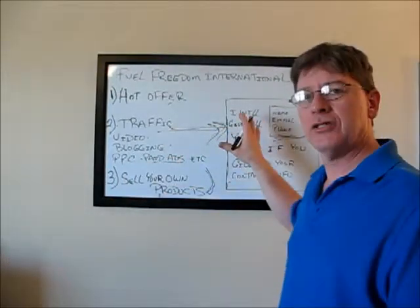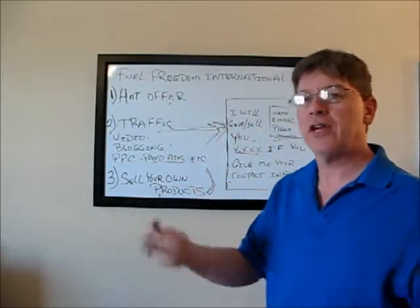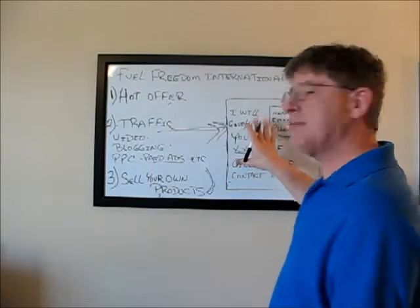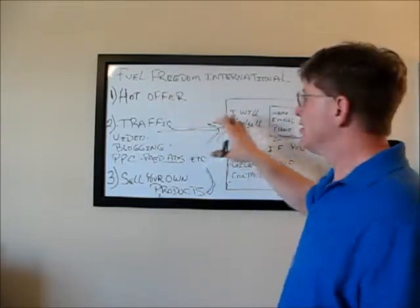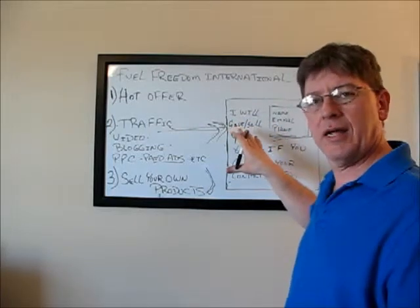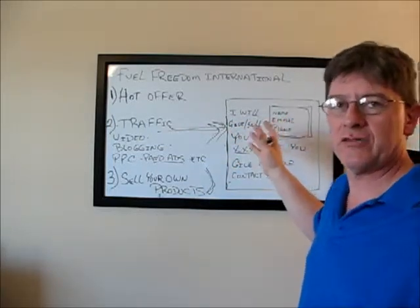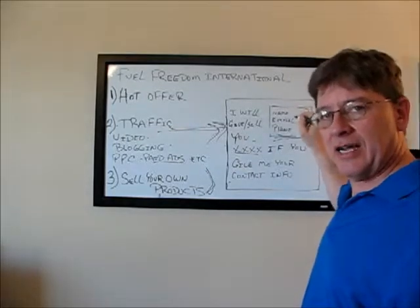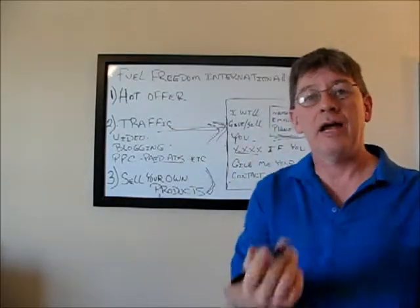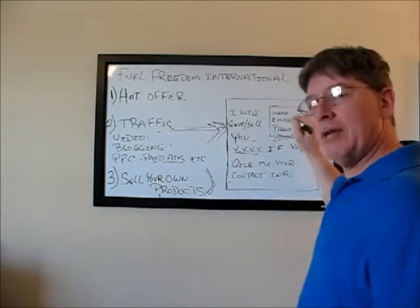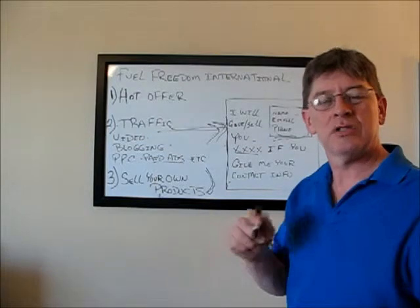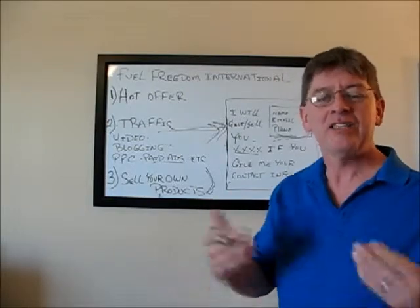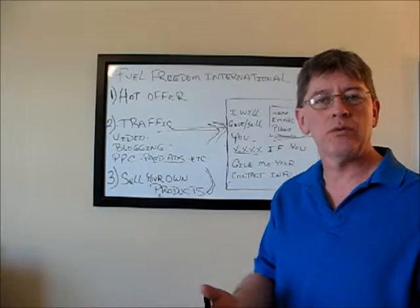Online we use something called a capture page to collect people's information. Offline you're collecting business cards, getting people's names and phone numbers. Online we use a capture page and we have a hot offer on that page — something we're either selling or giving away in exchange for their contact information. That contact information puts them in your online Rolodex, which is called your list. Once they put their name and email address in, they're on your list, and you can continue to build a relationship so that they get to know, like and trust you.